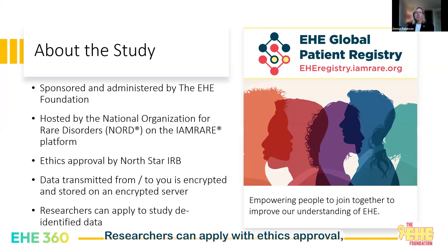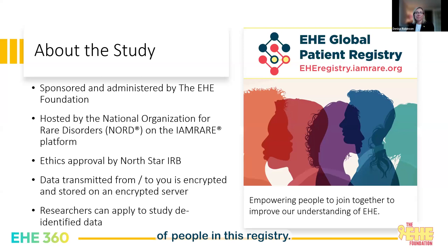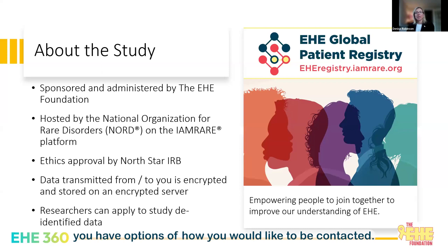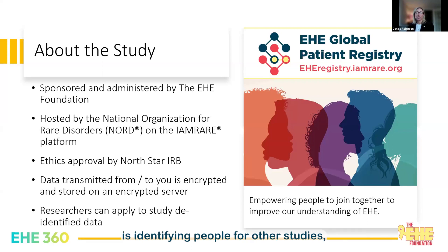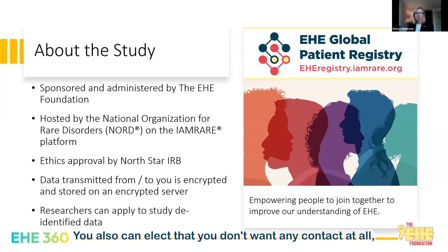Researchers can apply, with ethics approval, to access de-identified study data. They cannot access identifiers — we are never allowed to share identifiers of people in this registry. When you join the registry, you have options for how you would like to be contacted. One important part of the registry is identifying people for other studies, such as clinical trials. You can opt in to be contacted for relevant study opportunities, or you can elect to have no contact at all.